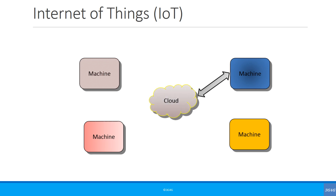So how is M2M different from IoT? In M2M, the connection happens between a group of machines and another group of machines. In Internet of Things, the machines communicate to a cloud server, and the other machines that need that information either pull it from the cloud server or are pushed information from the cloud. So in the case of Internet of Things, it's actually much more than M2M.